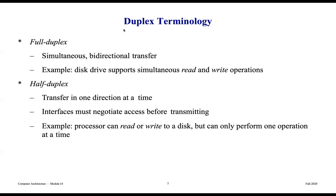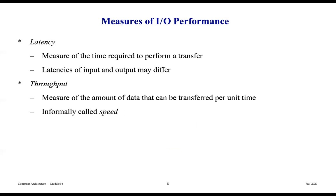Let's talk about duplex terminology. Full duplex means simultaneous bi-directional transfer of information — for example, a disk drive can support simultaneous read and write operations. Half duplex is transfer in one direction at a time, like a walkie-talkie where only one person can talk at a time; the channel must open before information can flow in the opposite direction. Interfaces must negotiate access before transmitting. An example would be a processor that can read or write to a disk, but cannot perform both operations simultaneously.